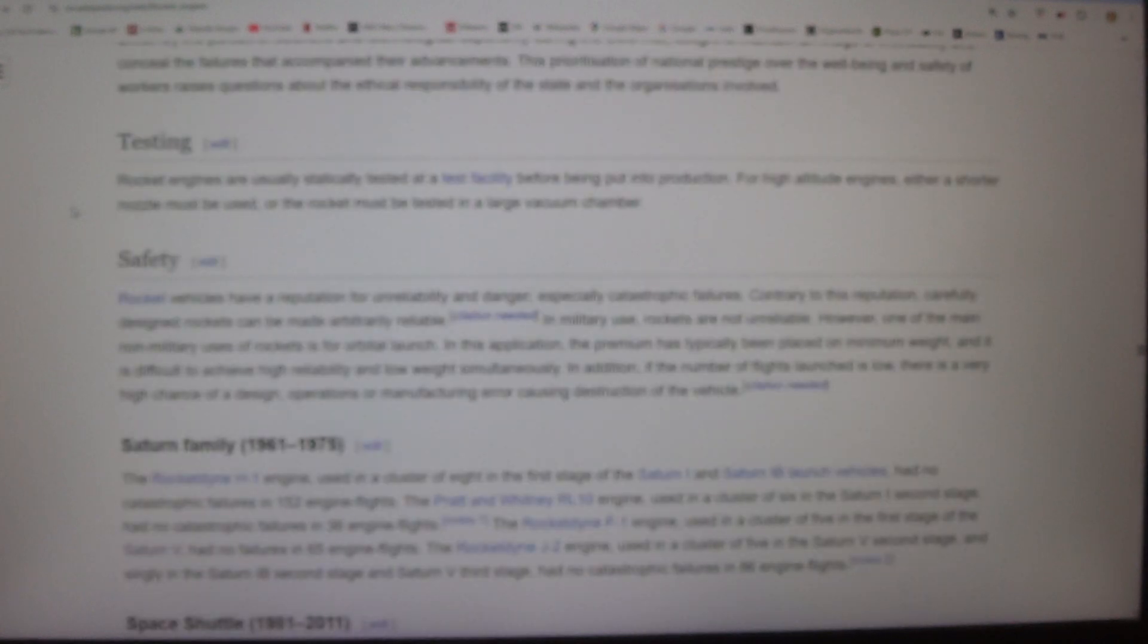The decision to keep fatal LPRE accidents hidden from the public eye reflects a broader ethical dilemma. The Soviet government, driven by the pursuit of scientific and technological superiority during the Cold War, sought to maintain an image of invincibility and conceal the failures that accompanied their advancements. This prioritization of national prestige over the well-being and safety of workers raises questions about the ethical responsibility of the state and the organizations involved.